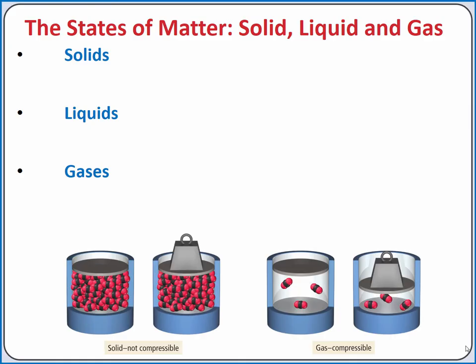We can begin to explain some of the properties of each state given the relative positions of the particles. For example, solids have a definite volume and a definite shape, because the particles are in fixed positions with respect to one another. Liquids, on the other hand, have an indefinite shape because the particles move with respect to one another, but they still have a definite volume because the particles remain relatively close. Gases have an indefinite volume and indefinite shape because they not only move with respect to one another but are very far apart — they can take the shape of the container they're in. This is also why solids are not compressible, but gases are compressible, since those molecules have lots of space between them.